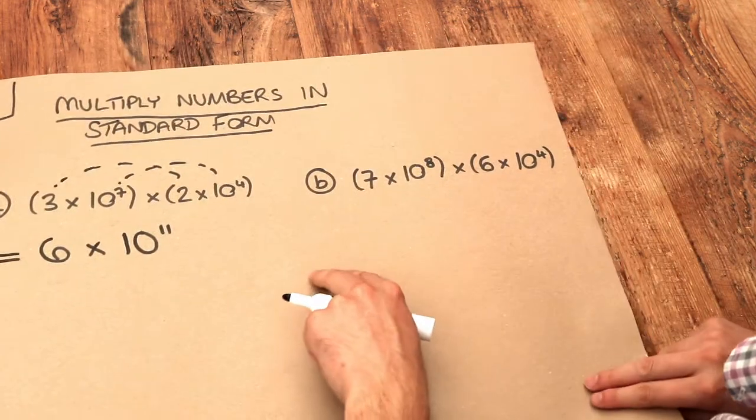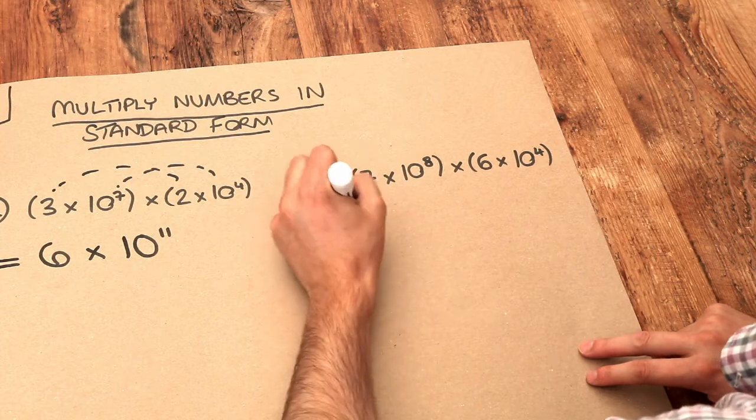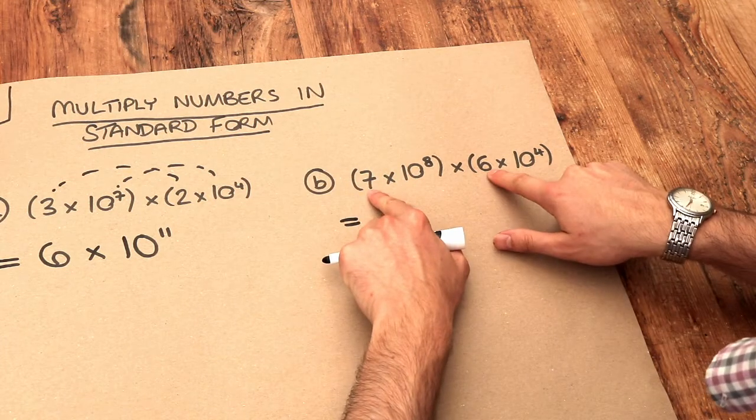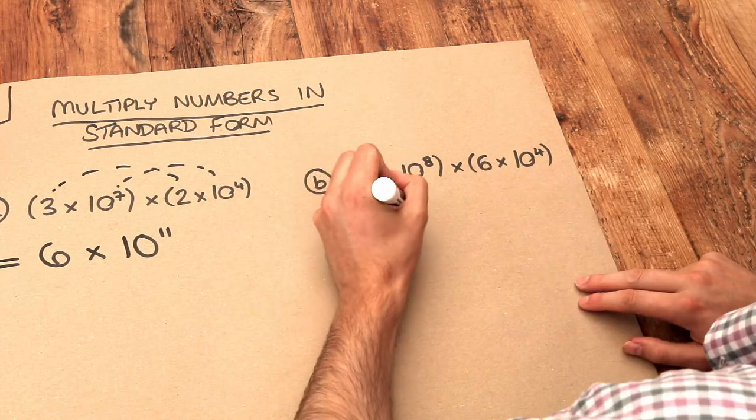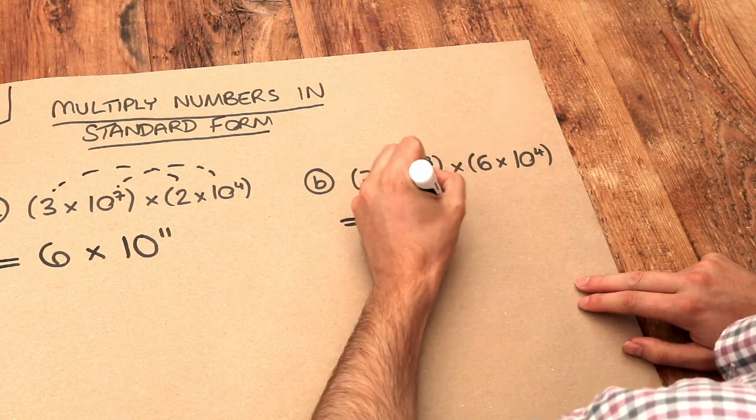What about B? Let's do the same thing again. We might as well do the 7 times the 6 first which is 42, and you might have spotted a problem already but we can fix that.